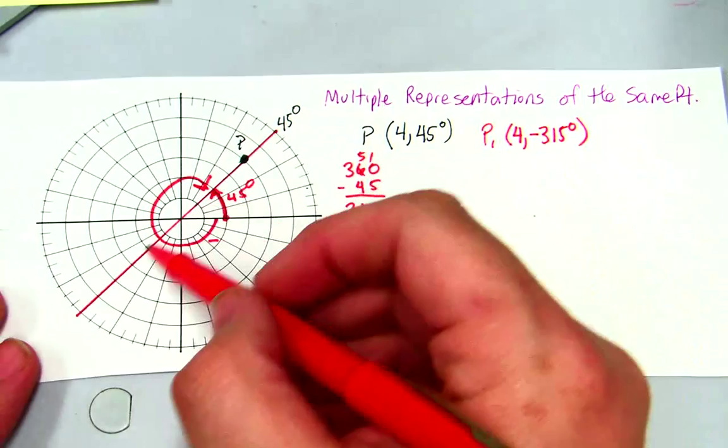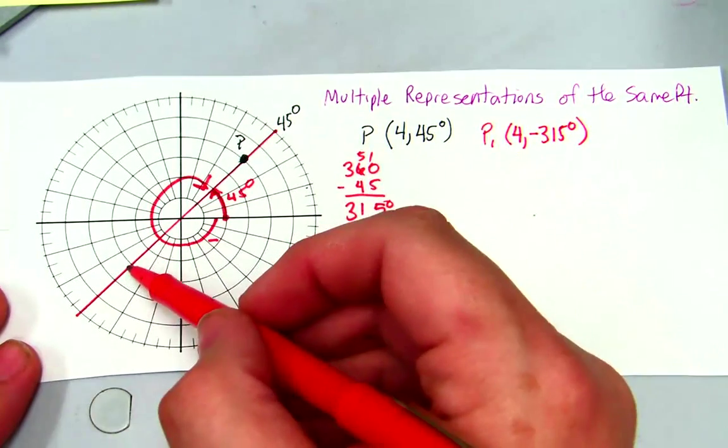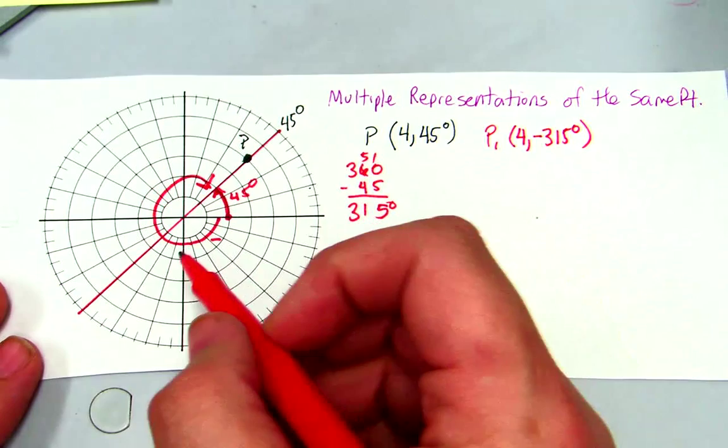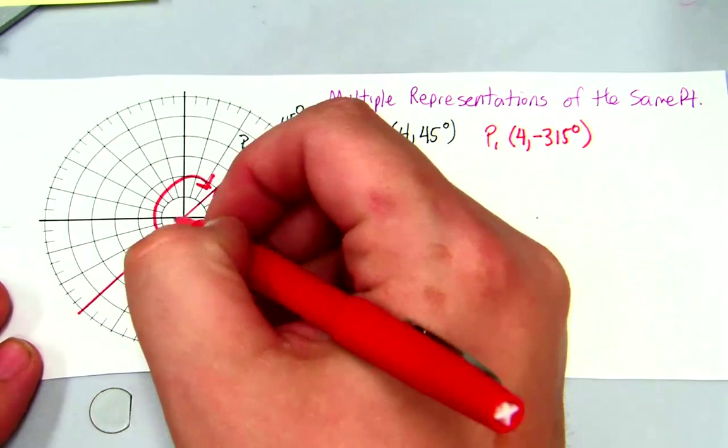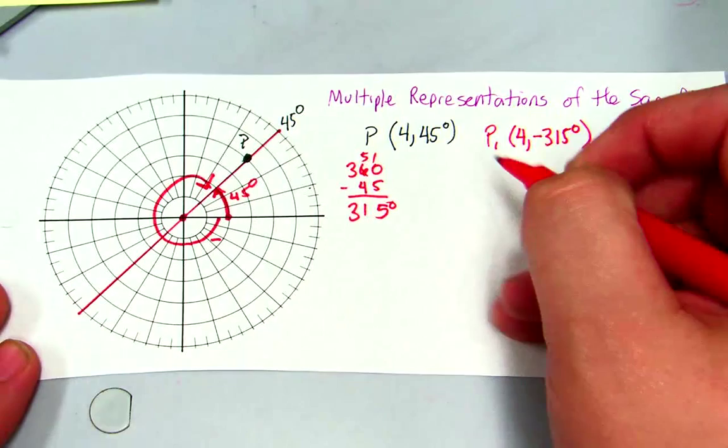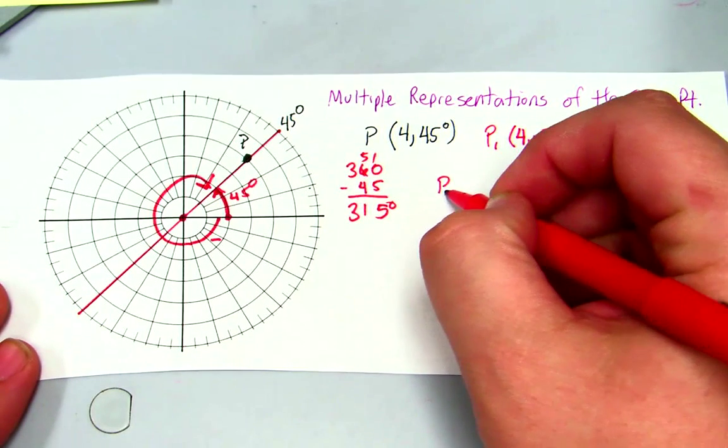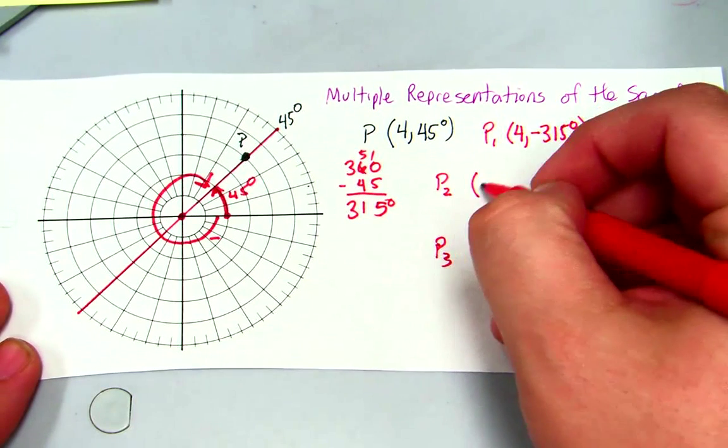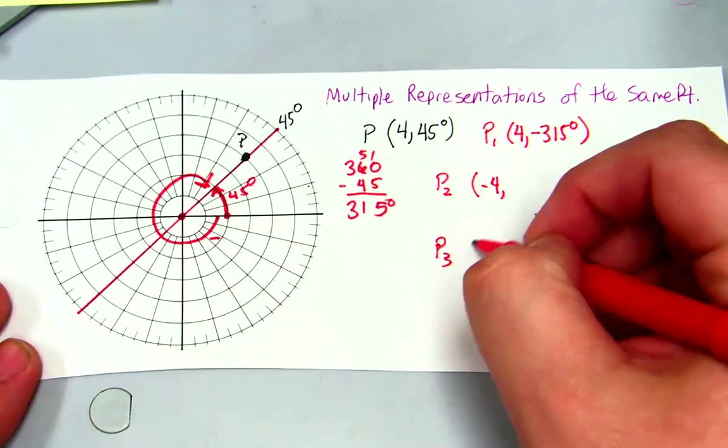Now the reason why I drew this over here is because in the previous video, we can see if I go from the pole and I go in an opposite direction, I can get a negative r. So for P2 and for P3, I want negative 4 comma something.